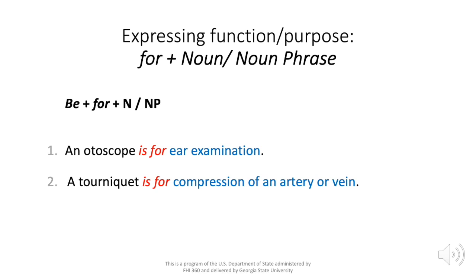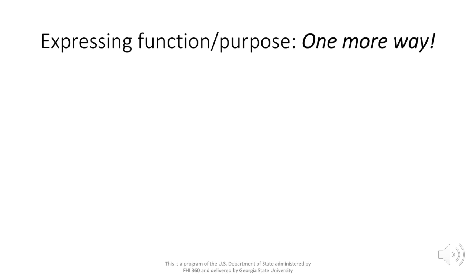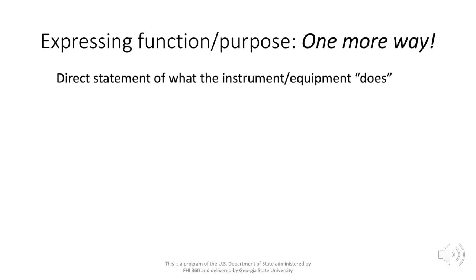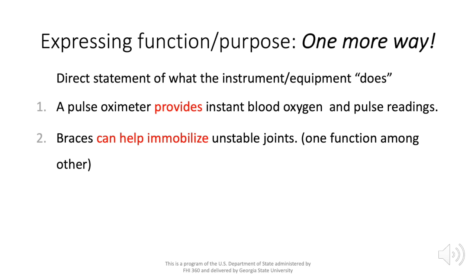So these are our three main ways of expressing functions. Now one more way of expressing functions consists simply of making a direct statement of what the instrument or equipment does. A pulse oximeter provides instant blood oxygen or pulse readings — that's what it does: provide instant readings.